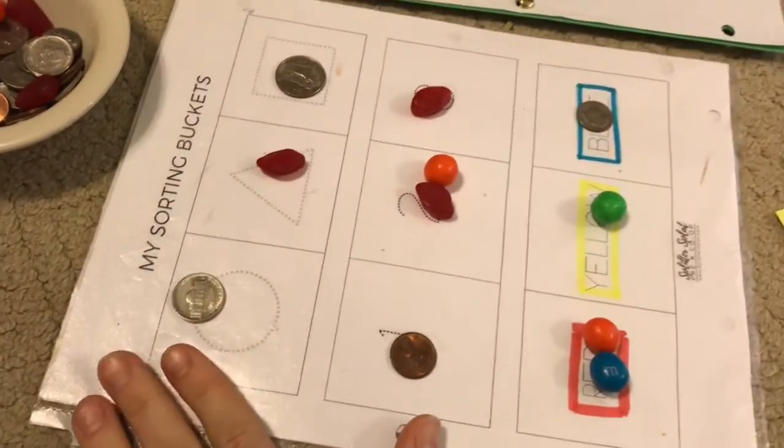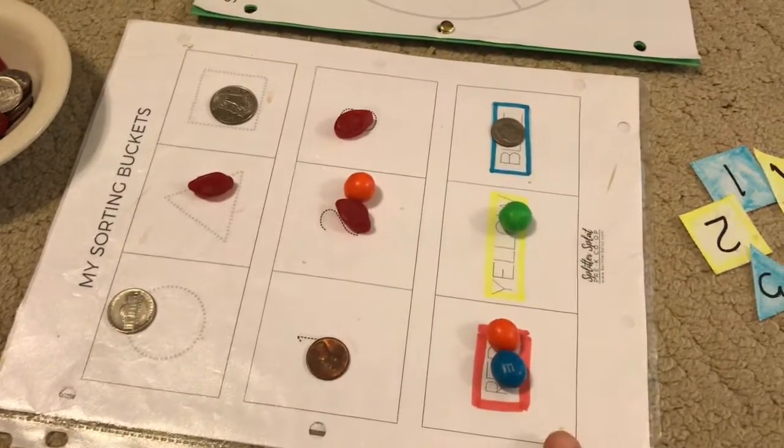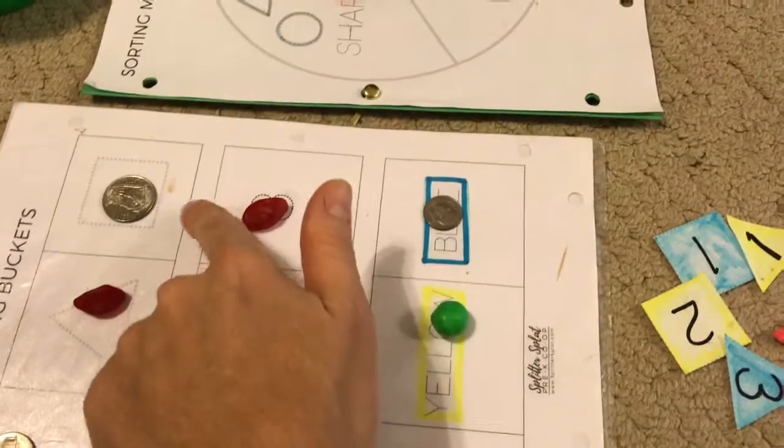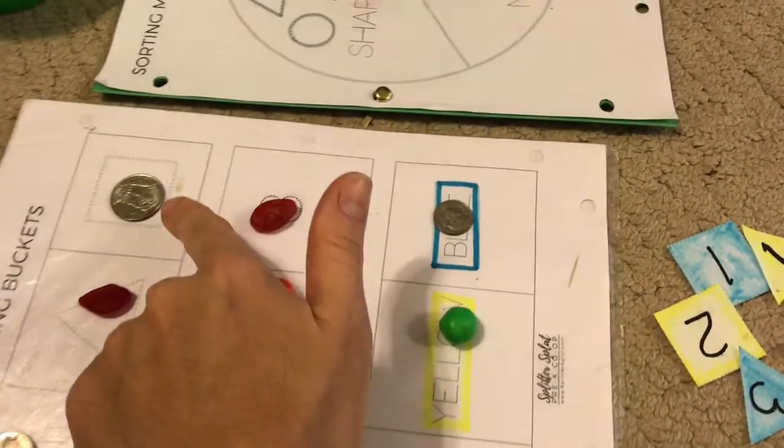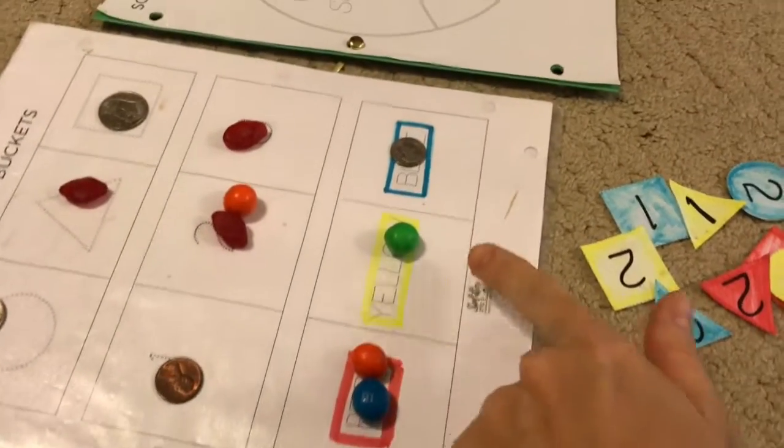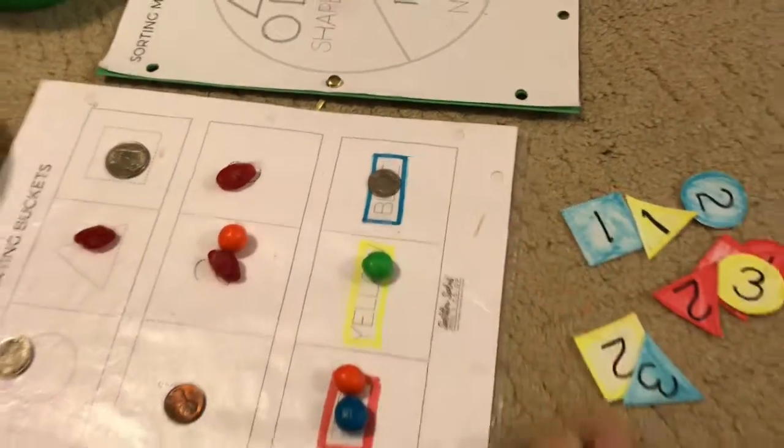Then you're going to print out your game board. So notice these game boards, the game board has different sorting buckets. These first three are shapes, these next three are numbers, and these next three are colors.